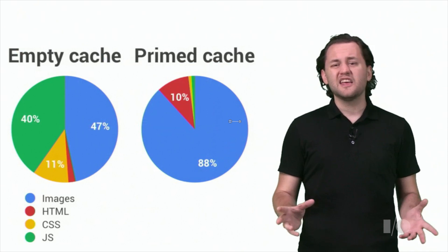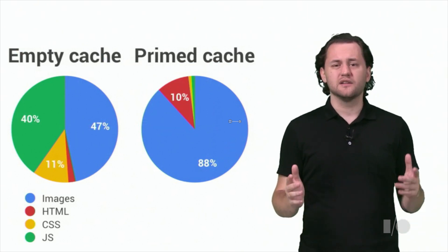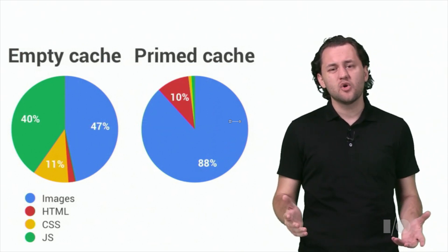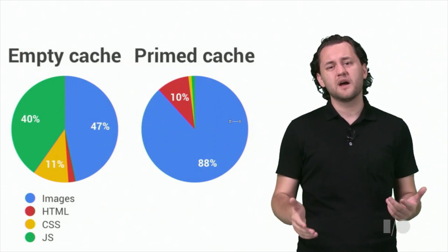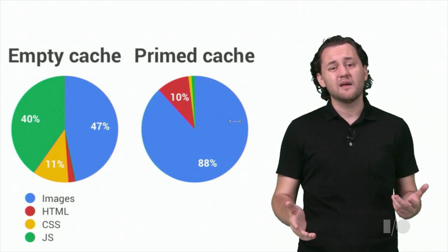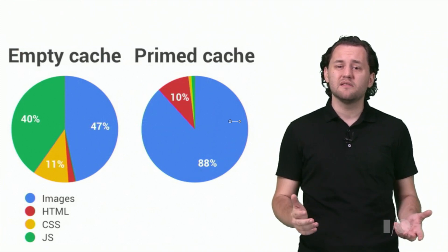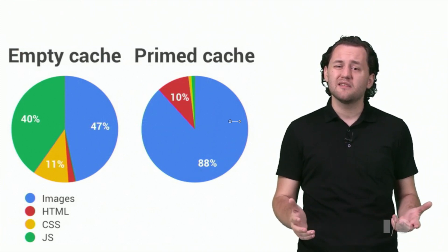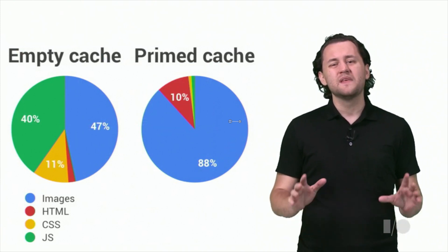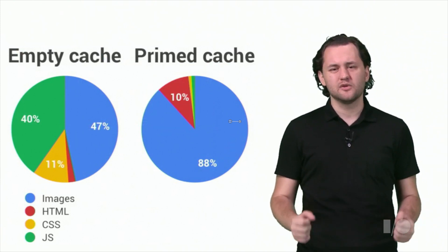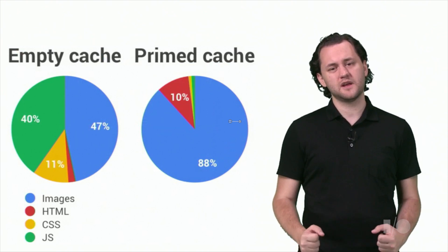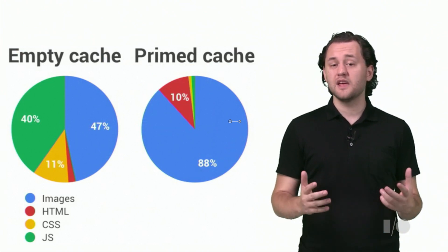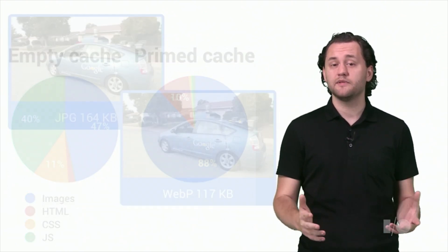Client-side techniques like lazy image loading help us to optimize rendering time, save bandwidth, and mitigate extensive backend load, but until recently we had no way to significantly optimize the images by themselves.